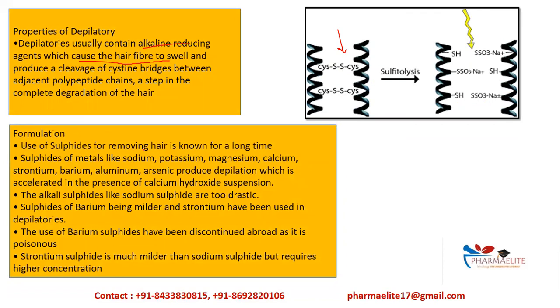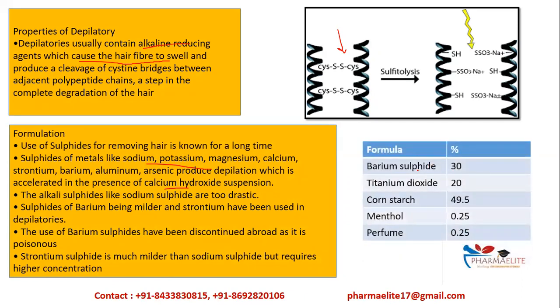The use of sulfides for removing hair has been known for a long time. Depilatories mainly contain metal sulfides such as sodium, potassium, magnesium, calcium, strontium, and barium sulfide, accelerated in the presence of calcium hydroxide suspension. Sodium sulfide requires high concentration and can be too drastic. Barium sulfide has been discontinued because it is proven to be poisonous. Strontium sulfide is milder. A typical formula includes barium sulfide, titanium dioxide, cornstarch, menthol, and perfume.